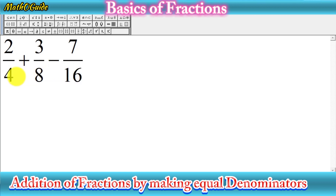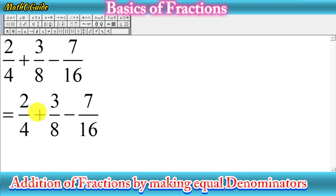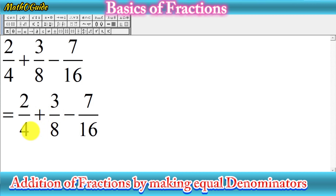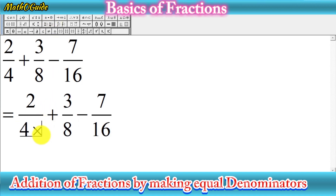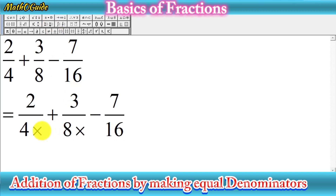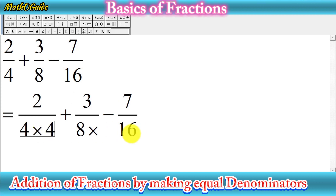Let's start the solution of this question which has both addition and subtraction signs. First, rewrite all three fractions. Then identify the denominators — we have four, eight, and sixteen. The largest is sixteen, so we need to convert the two smaller denominators, four and eight, into sixteen. We need to find what number multiplied by four gives sixteen, and what number multiplied by eight gives sixteen.